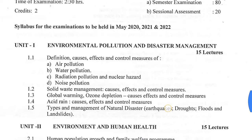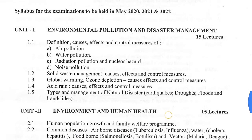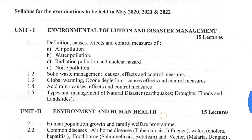The first unit of environmental studies is environmental pollution and disaster management. Topics in this unit are: definition, causes, effects and controlling measures of air pollution, water pollution, radiation pollution and nuclear hazard, noise pollution, and soil and waste management — causes, effects and controlling measures.